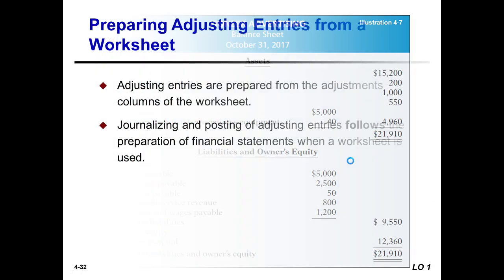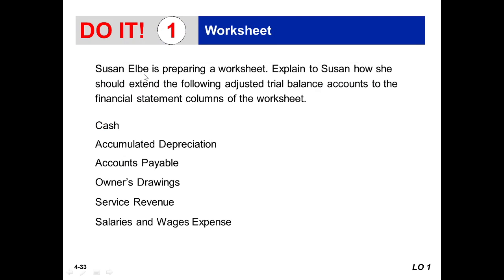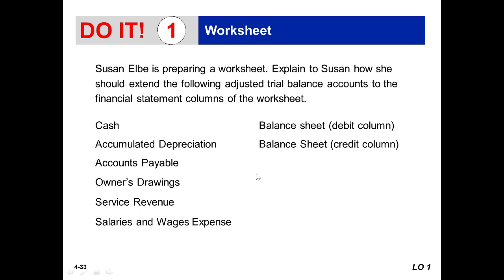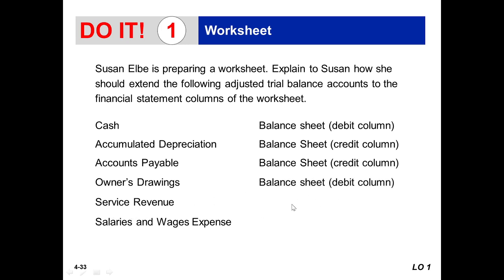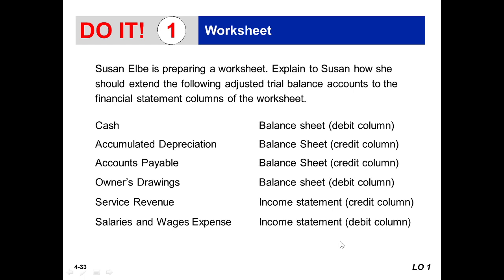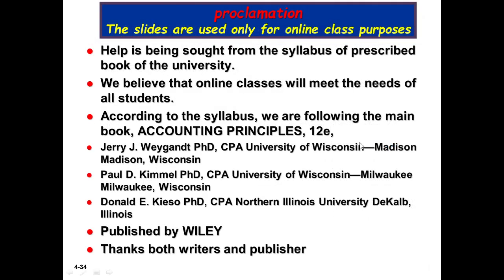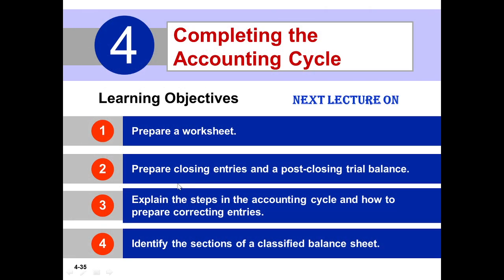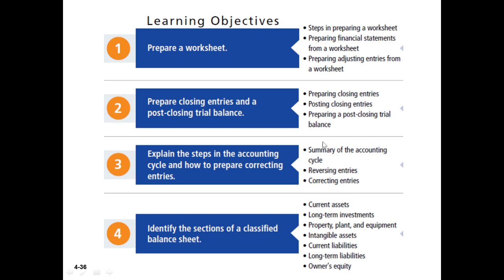Now here is a question: Susan LB is preparing a worksheet. How should she extend the following adjusted trial balance accounts to the financial statement columns? Cash is a balance sheet item in the debit column. Accumulated depreciation is a balance sheet item in the credit column. Accounts payable is a balance sheet item in the credit column. Owner's drawings is a balance sheet item in the debit column. Service revenue is an income statement item in the credit column. Salaries and wages expense is an income statement item in the debit column.